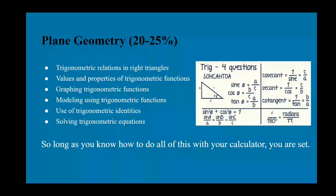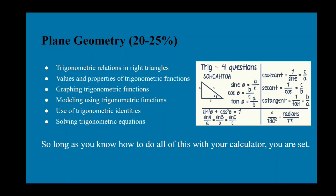Trigonometry is five to ten percent of the test. Trigonometric relations within right triangles are important — sine is the ratio of the opposite side to the hypotenuse, cosine is adjacent over hypotenuse, and tangent is opposite over adjacent. Their inverses — cosecant, secant, and cotangent — are also tested. Know that sine squared plus cosine squared equals one, know the law of sines, and be able to convert between degrees and radians.